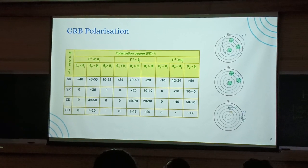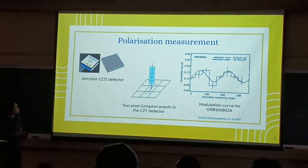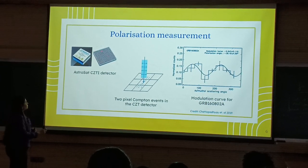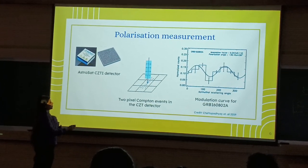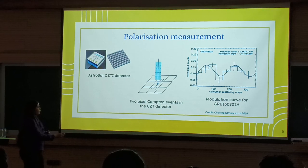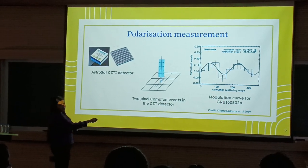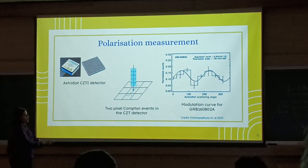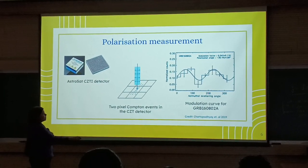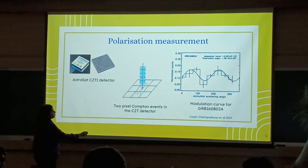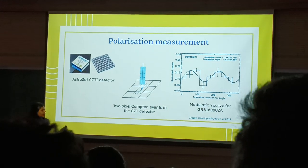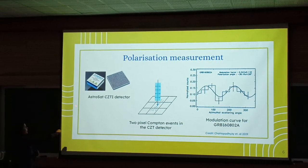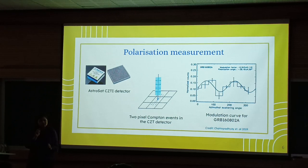What we do is use AstroSat's CZT detectors, which are pixelated detectors. When a polarized photon is incident on these detectors, it gets scattered in the perpendicular direction. Each pixel will then have a different number of counts, and based on that we get a modulation curve — different pixels will have different count numbers. By the way, if you want to see this detector in real life, you can visit our Daksha booth and see the real detector that is currently in space on AstroSat.